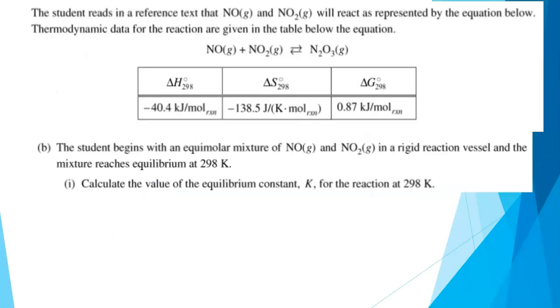The student reads in a reference text that NO and NO2 will react according to the reaction shown here, and then we're given some thermodynamic data. We're given delta H, we're given delta S, we're given delta G for this reaction. Part B: The student begins with an equimolar mixture of NO and NO2 in a rigid reaction vessel, and the mixture reaches equilibrium at 298 Kelvin. Calculate the value of the equilibrium constant K for this reaction at 298 Kelvin. This question was scored out of one point.